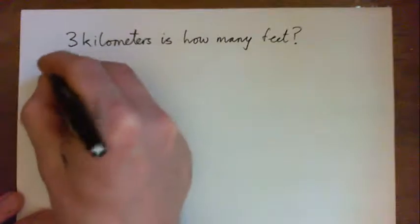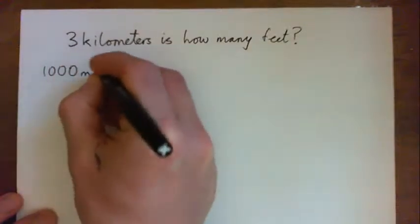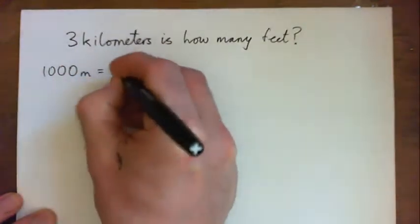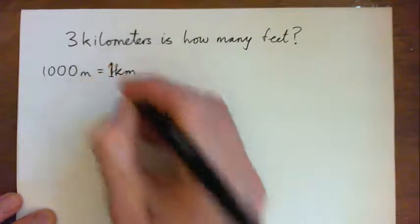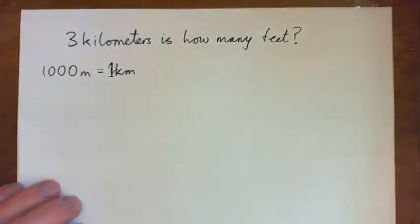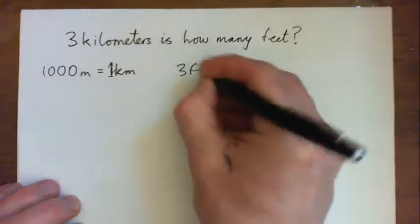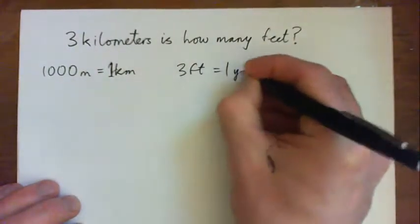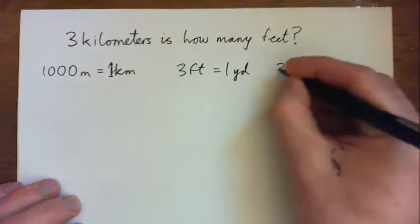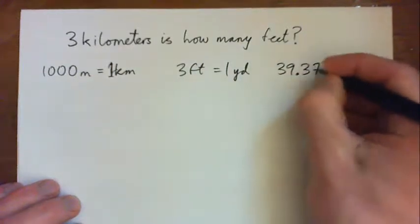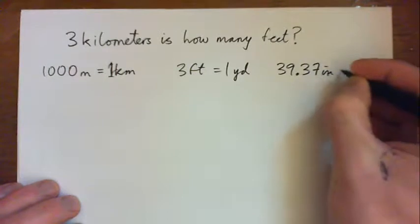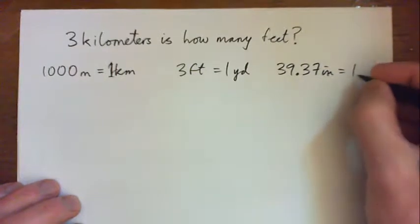We know that 1,000 meters equals one kilometer, there are three feet in one yard, and there are 39.37 inches in one meter.